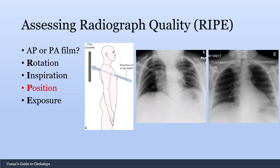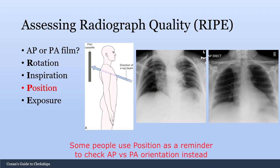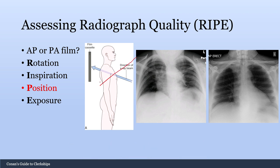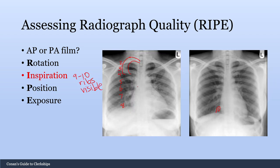P is for position — this refers to the position of the clavicles and assesses whether the radiograph was taken at an angle. If the clavicles are very low, the x-ray was shot upward, compressing the lung fields and making things difficult to identify. If the clavicles are too high, the radiograph was shot downward, again compressing the lungs. What you want to see is the clavicles situated between the third and fourth ribs.